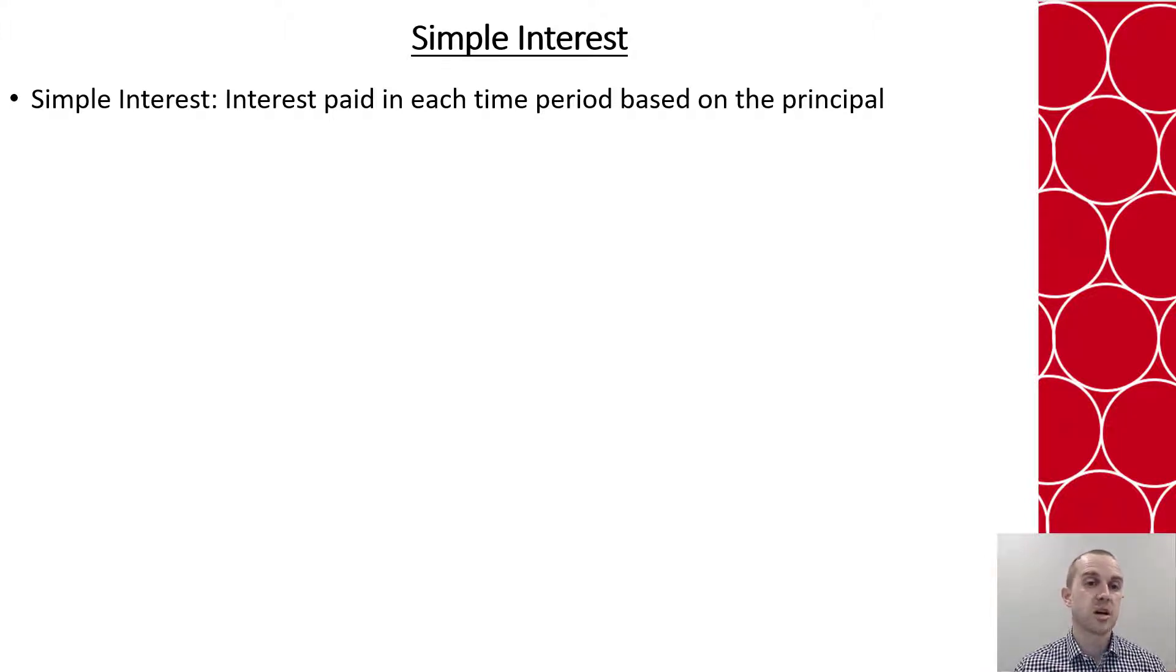So we use a very basic formula to determine that interest that is accumulated, and it is that I equals P times r times t. Now what does each of those terms mean?